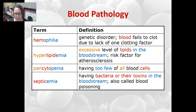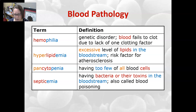Pancytopenia means having too few of all the blood cells — pan meaning all, cyto meaning cells, and -penia meaning too few. Septicemia is having bacteria or their toxins in the bloodstream; it is also called blood poisoning.